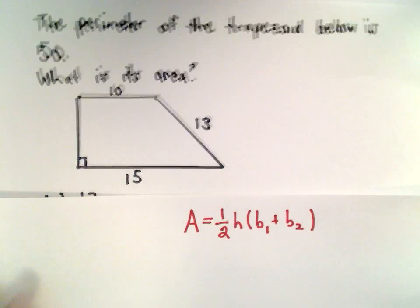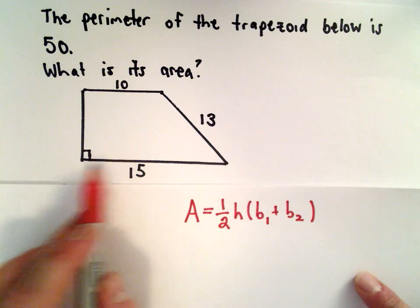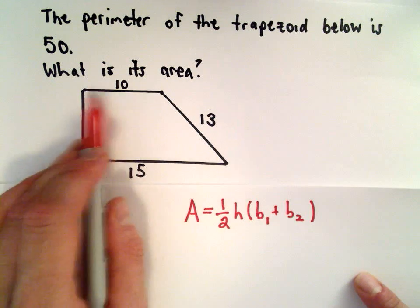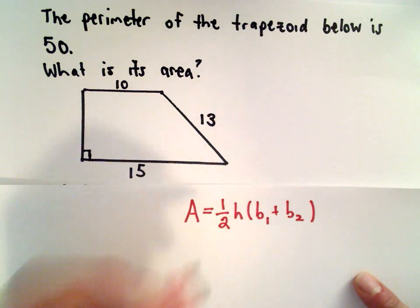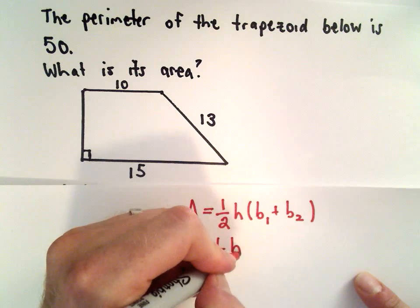The bases are the sides of the trapezoid that are parallel. So the sides that are parallel are the top part and the bottom part. The height is going to be this left side, but that's what we don't know. So I'm going to leave that labeled as h.